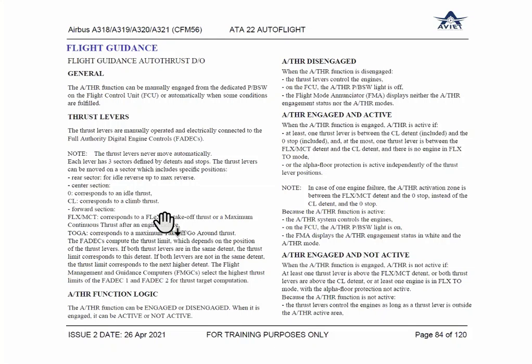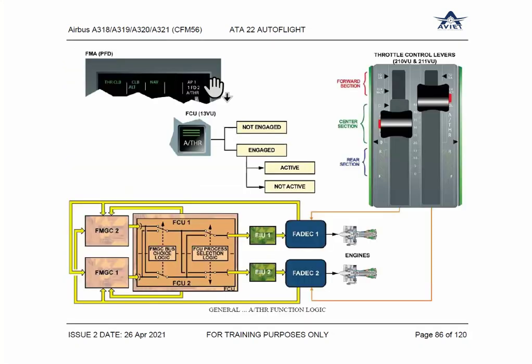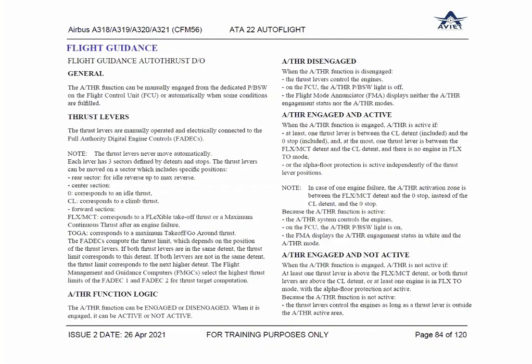Auto thrust can be engaged by a dedicated push button on the FCU — the Flight Control Unit — where an auto thrust single button is available. With that button the pilot can engage auto thrust manually, and the same can also be done automatically under certain conditions.